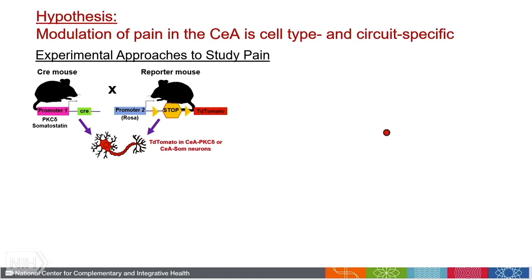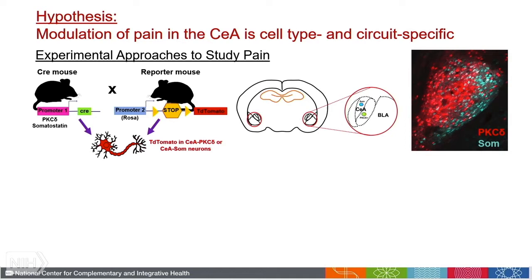In our lab, the overarching hypothesis is that the modulation of pain in the CEA is cell-type and circuit specific. We use molecular genetic strategies in mice to tackle our question, and we have focused on two specific subpopulations of cells based on their genetic identity. One cell population expresses PKC delta and the other expresses somatostatin. We started with these two populations because they constitute most of the CEA, as shown in this figure, and because they have completely non-overlapping expression, allowing us to look at two independent populations.